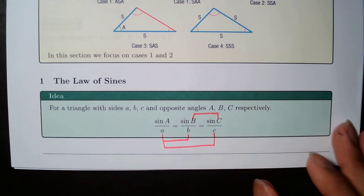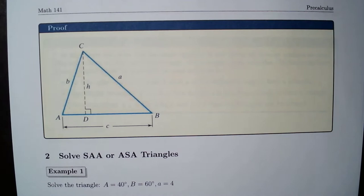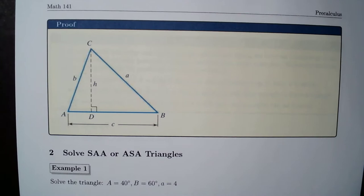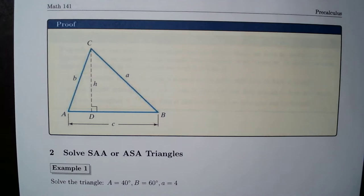It would be a good idea to explain where this Law of Sines is coming from using right triangles. I'm going to prove this formula — specifically, I'm going to prove the sine A over a equals sine B over b part. So we have this picture right here.